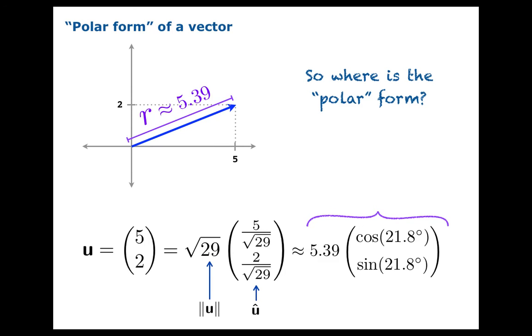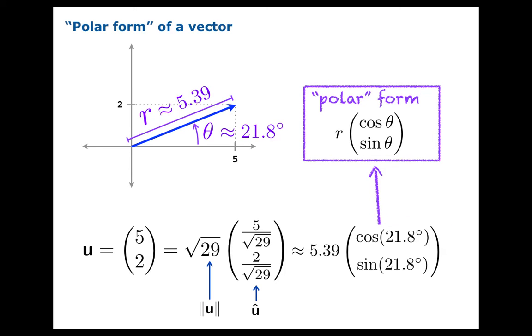It's got its length, which we call r, and this angle theta. Well, what is that information? That's exactly the information for the polar form, the polar coordinates of a point. So when you write a vector this way, I think it deserves the name polar form because you're basically giving the polar coordinates of a point.